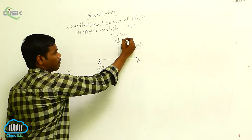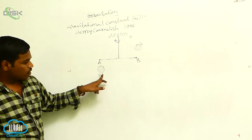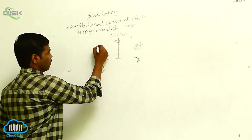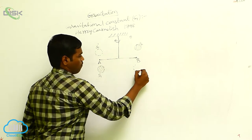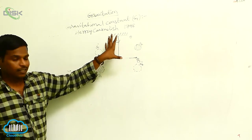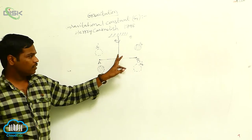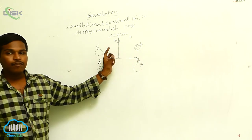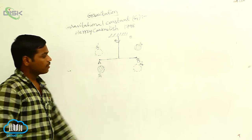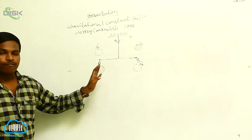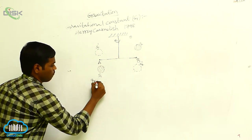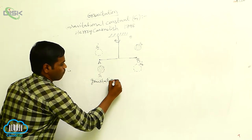Due to this torque, the thread is twisted by an angle theta. The positions of the bigger spheres change to S1-dash and S2-dash. This torque acting between the spheres is called the gravitational torque. The gravitational torque is equal to the force multiplied by the length of the rod.